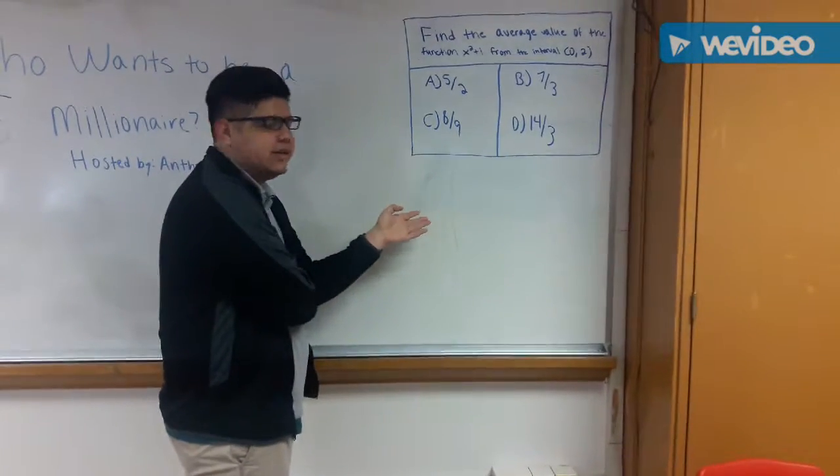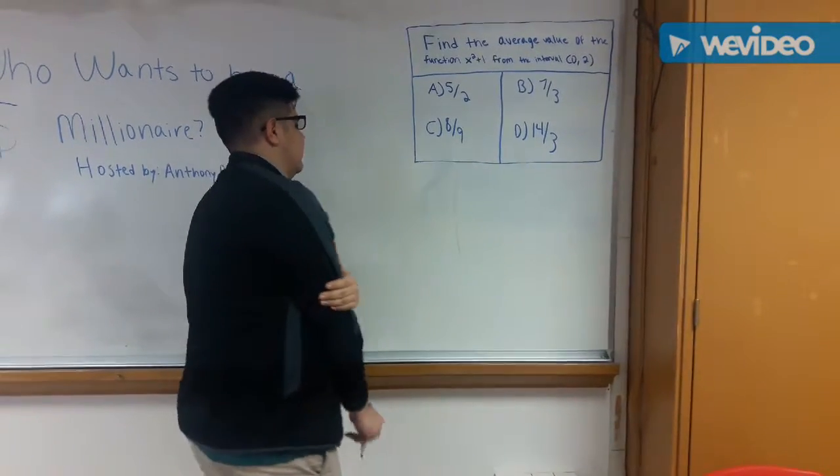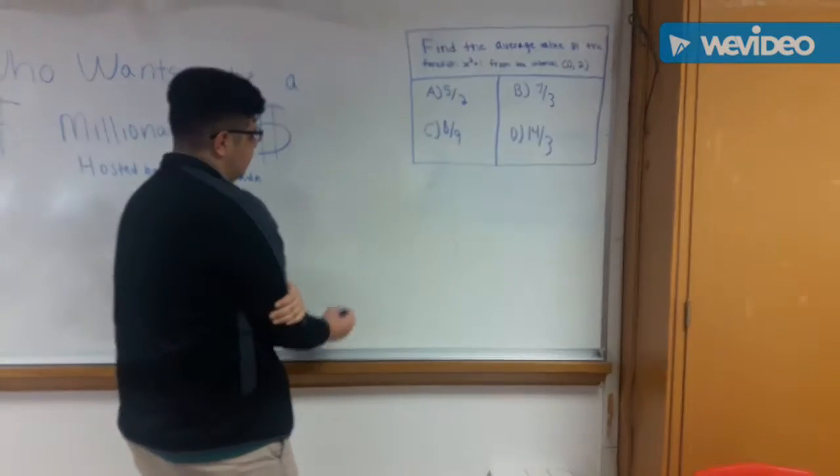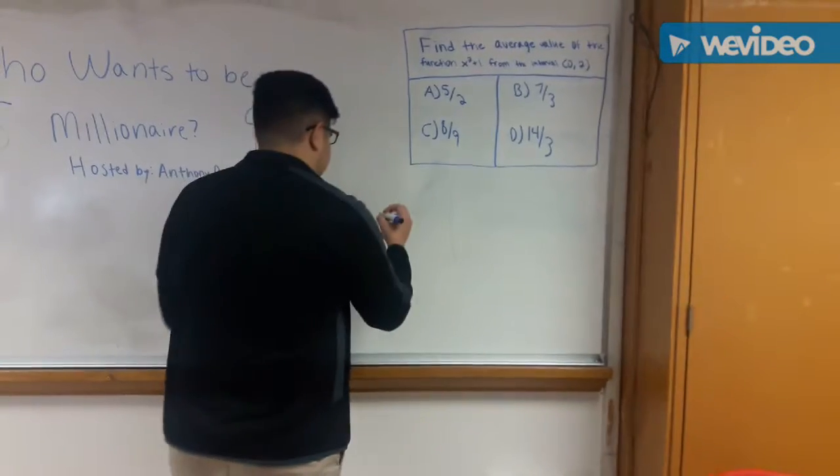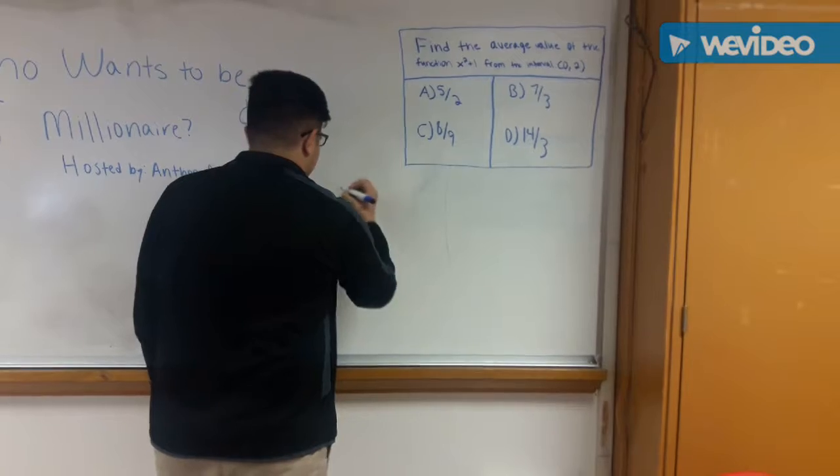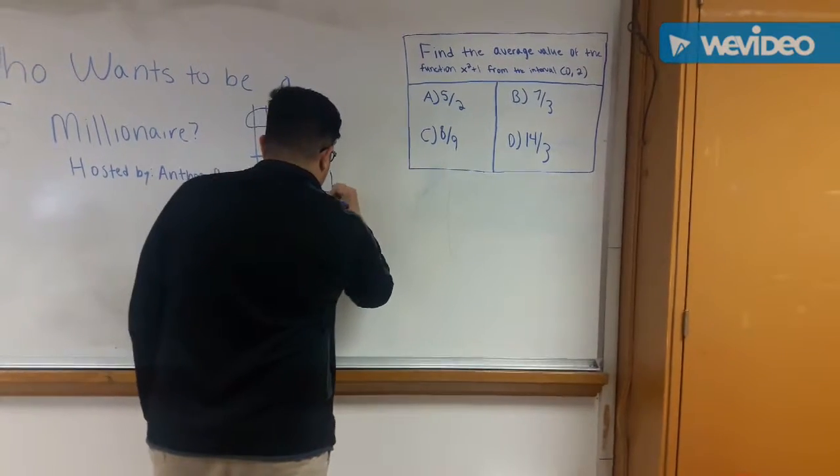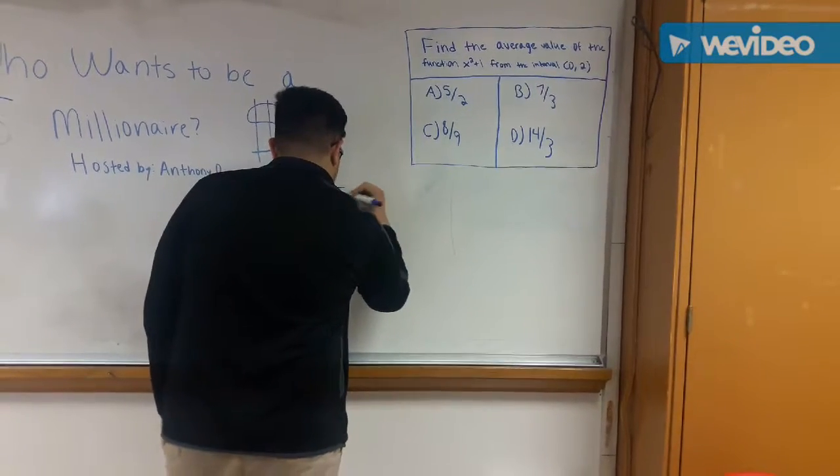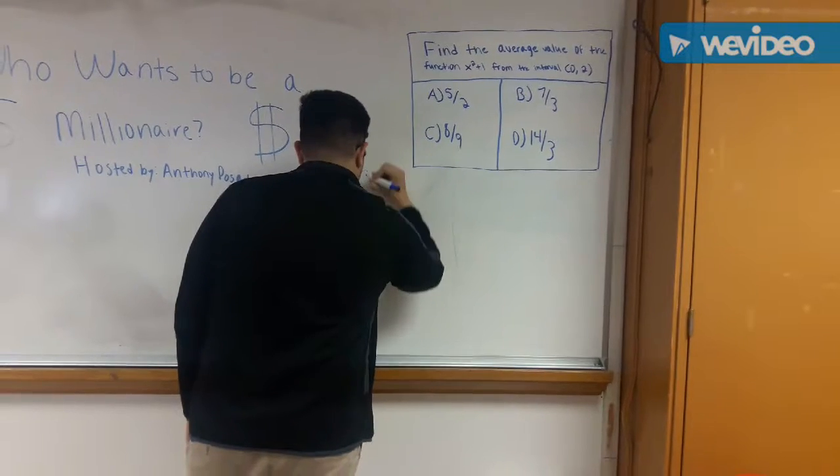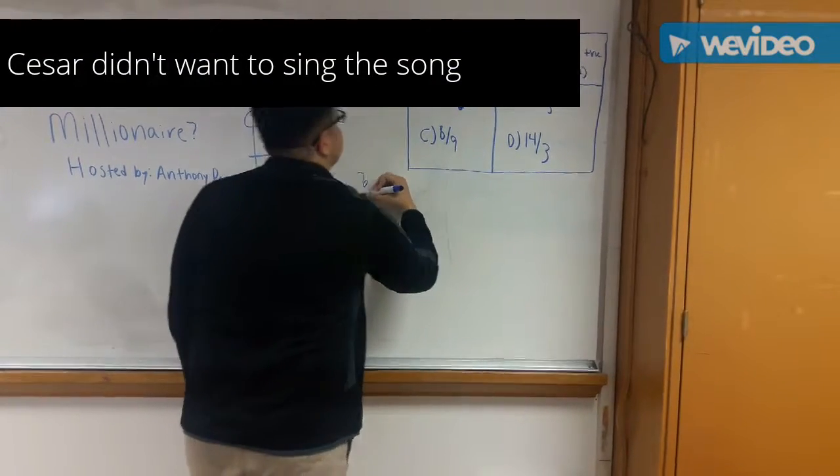You think you can explain to me how you did it? Alright my friends, so you have to first write down the average value formula. And this is the average value formula for you. So copy this down. It's 1 over b minus a times the integral of the function evaluated from a to b, and that should give you your average value.